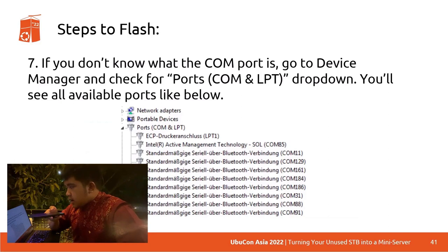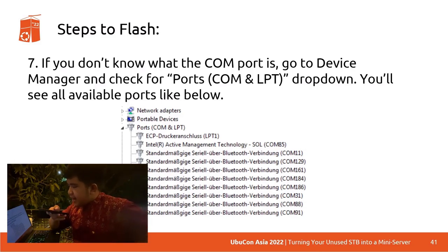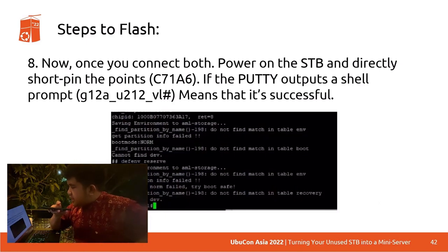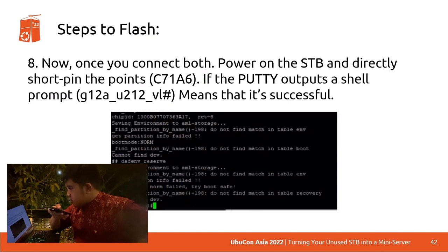If you don't know what the COM port is, go to Device Manager and check under 'Ports (COM & LPT)' in the dropdown — you'll see all available ports like COM 11, COM 129, COM 161, and others. Once you connect both, power on the STB and directly short-pin the C7186 point. If the PuTTY or serial client outputs a shell prompt — in this case 'G12A U212 VL/#' — that means it's successful and we have access to the internal shell.